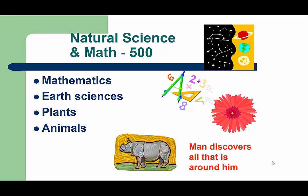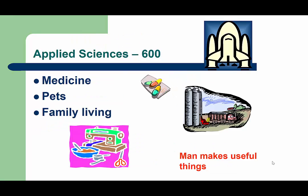Our natural science and math, or 500s section, is really large because we have all of those animal books in this area — it's a really popular, interesting section. The applied sciences section, or the 600s, is filled with books about how we use science. For example, books about animals that are pets are located in the 600s, and the cooking books are also here.